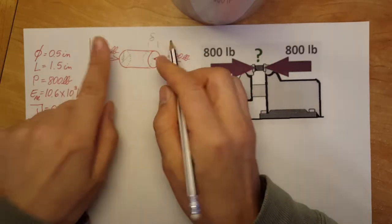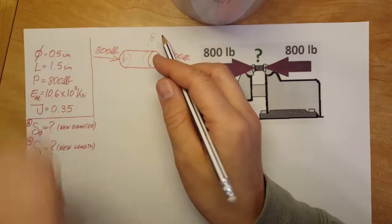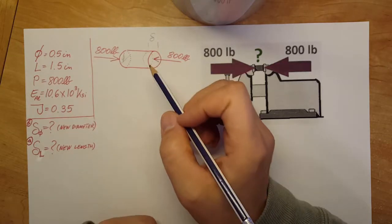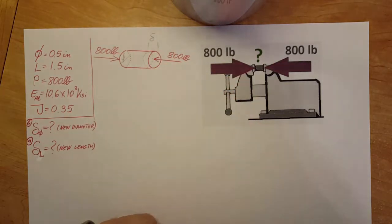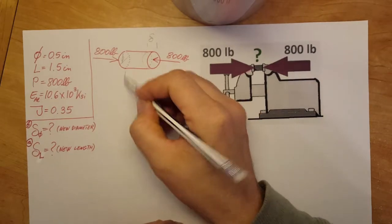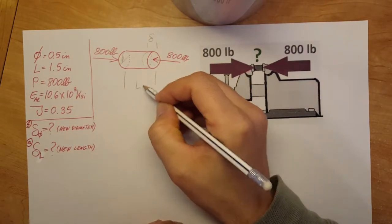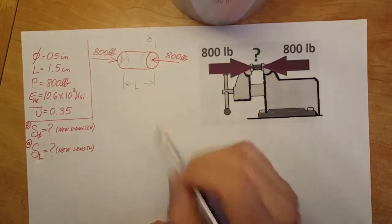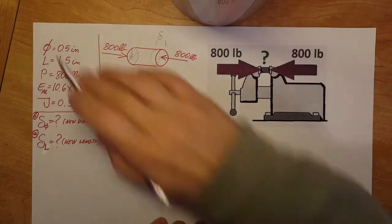This will also change as this one changes. The diameter will also change. We know this from Poisson's ratio. And we also know the original length, we're going to call it L. These are all the information that is given to us.